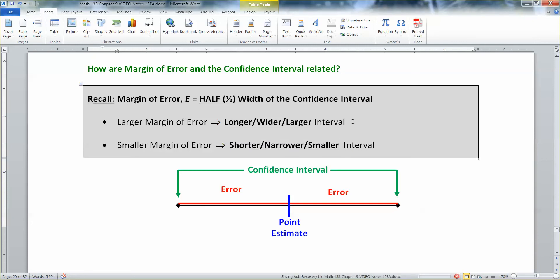We already have seen that a couple times, but there it is again. So your error and your interval are basically the same thing. The error is just half the interval. That's all. So it's half the width of the confidence interval.